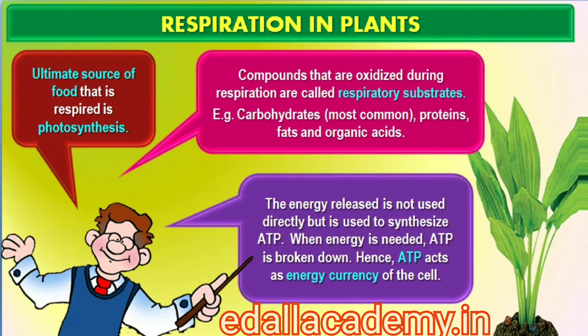Hence, even in green plants all other organs, tissues and cells that are non-green need food for oxidation, and food has to be translocated to all non-green parts. Animals are heterotrophic — they obtain food from plants directly (herbivores) or indirectly (carnivores). Saprophytes like fungi are dependent on dead and decaying matter. Ultimately, all the food that is respired for life processes comes from photosynthesis.